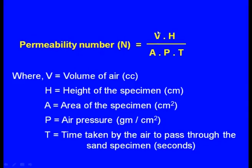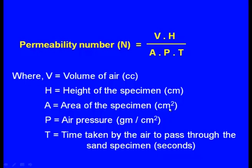The permeability number is equal to VH divided by APT, where V is the volume of air, H is the height of the specimen in centimeters, A is the cross-sectional area of the specimen in square centimeters, P is the air pressure in grams per square centimeter, and T is the time taken by the air to pass through the sand specimen expressed in seconds.